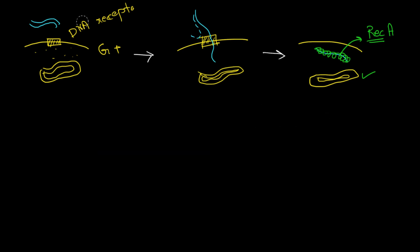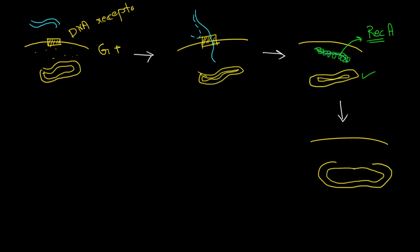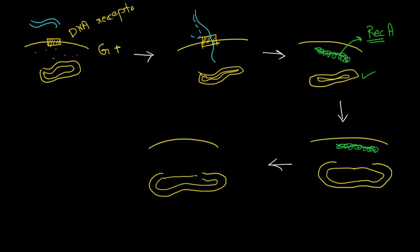RecA finds this homologous region between the two sets of DNA and cleaves the chromosomal DNA at those points of homology. The double-stranded chromosomal DNA will have a cleaved segment in one of its strands, and the single-stranded DNA bound to the RecA protein will then bind to the cleaved part, so the extracellular DNA gets incorporated within the bacterial chromosome.